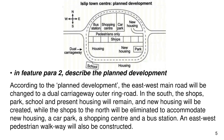Now in feature paragraph 2, describe the planned development. According to the planned development, the east-west main road will be changed to a dual carriageway outer ring road. In the south, the shops, park, school, and present housing will remain and new housing will be created, while the shops to the north will be eliminated to accommodate new housing, a car park, a shopping center, and a bus station. An east-west pedestrian walkway will be constructed.